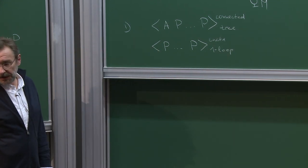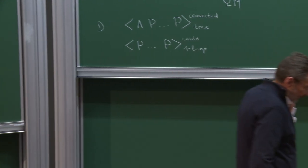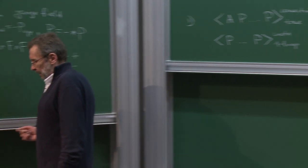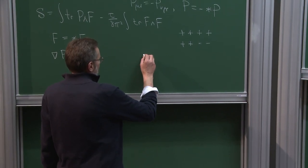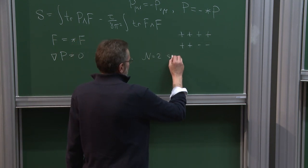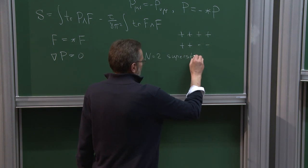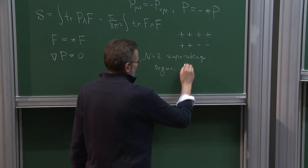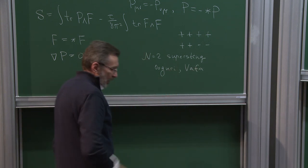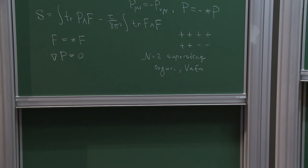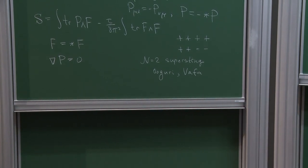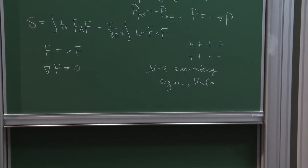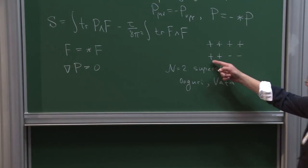This makes the theory similar, to some extent, to a string theory called N=2 superstring considered by Ooguri-Vafa. In that theory, at the level of effective field theory, the equations look similar to self-duality equations, it is also real in signature (2+, 2−), and it also has no amplitudes beyond one loop.